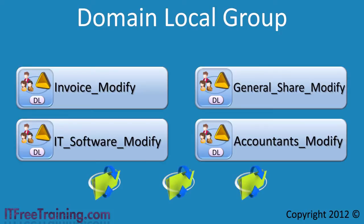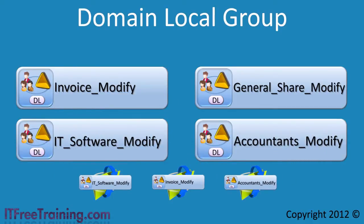If a local administrator creates a new share on a server, they can provide access to these groups as required. Notice that the administrator may not have access to change the membership of the groups but can use these groups to provide access to resources. Without an approach like this, an administrator would require knowledge of all resources in the domain that the universal group would need access to — in a large network, no one person would know the answer to this. The choice of group here is a domain local group, since its scope is limited to that domain. An administrator in a different domain could not use a domain local group in their domain and bypass security.